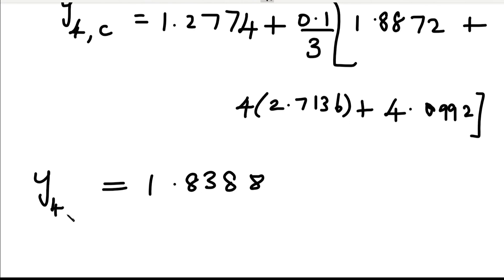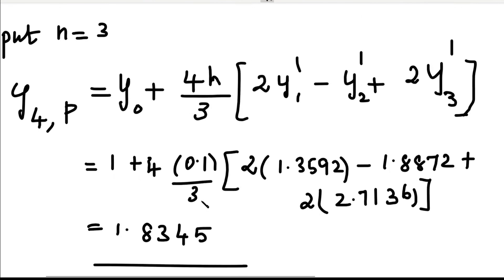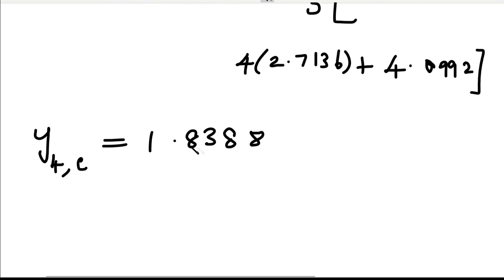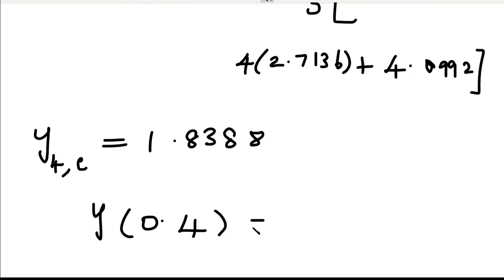After substituting all values and simplifying, we get the final answer: y(0.4) = 1.8388. This is the solution at x = 0.4 using Milne's method.